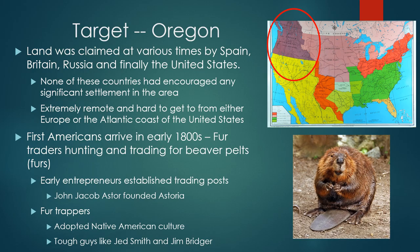The first Americans arriving in Oregon were in the early 1800s — fur traders hunting and trading for beaver pelts. Beaver fur was very valuable because it was waterproof, used to make hats, coats, blankets, and other things. Some of the very first entrepreneurs in this area established trading posts. One of the more famous ones was established by John Jacob Astor in Astoria, Oregon.